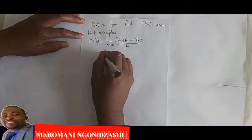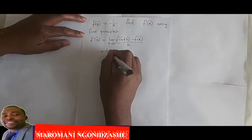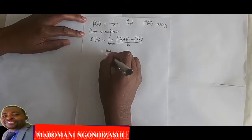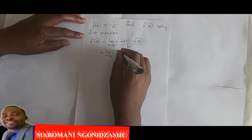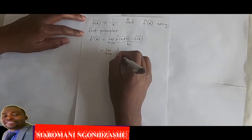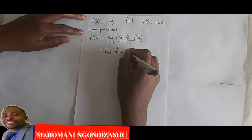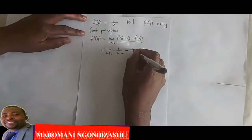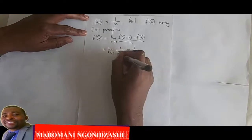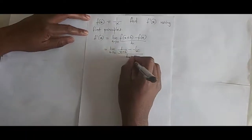Which is now equal to the limit as h approaches 0 of, where there is x I put x plus h, so it will be 1 over x plus h minus f of x, and my f of x is 1 over x, everything over h.